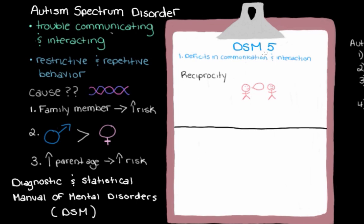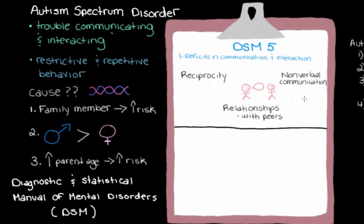Another sign we would need to see is some sort of deficit in developing and maintaining relationships. Here we're talking about relationships with peers — people around the same age — because it's actually not uncommon for kids with Autism Spectrum Disorder to befriend people who are younger or older than them, but still struggle with building relationships with people their own age. The last sign under this social communication and interaction category is some sort of deficit in nonverbal communication, meaning trouble understanding and using things like hand gestures, eye contact, and facial expressions when communicating.